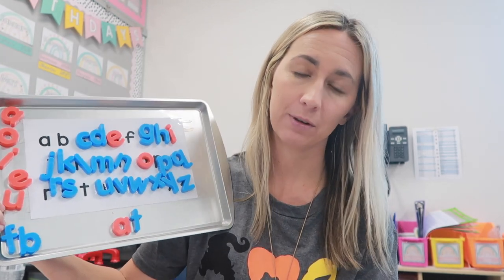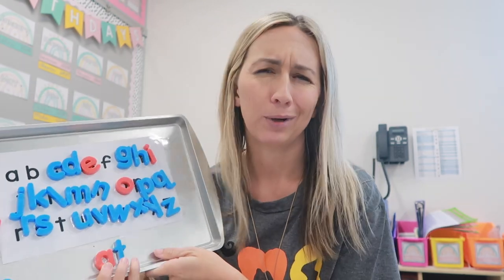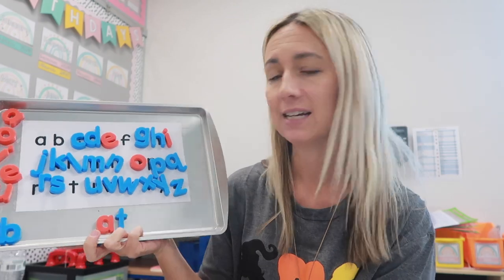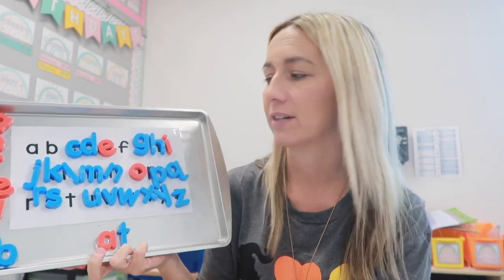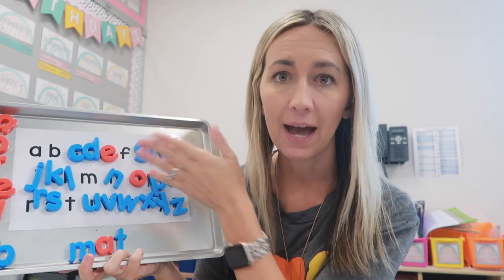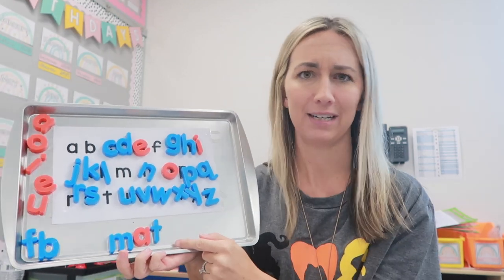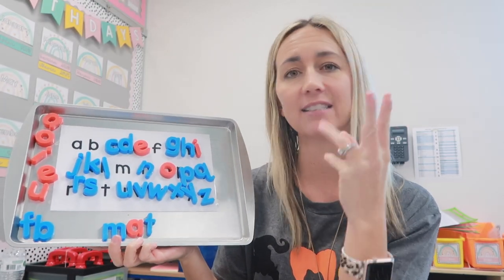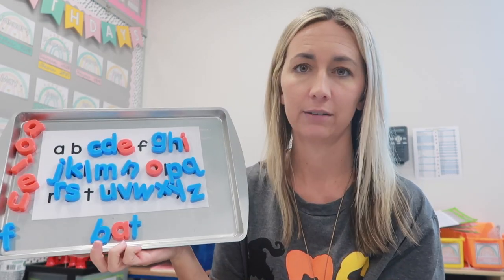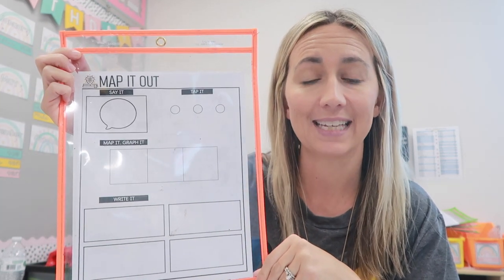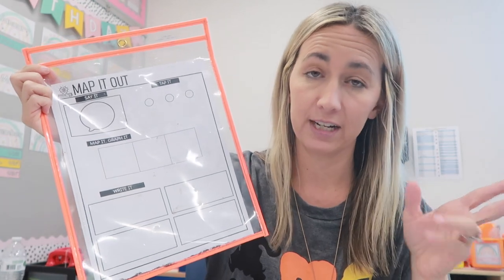Depending on the level, you can offer more support — 'I still have at, now I want to make mat, what letter is that?' — or challenge advanced students: 'I have mat but now I want bat — what letter do I need to take away?' and identify whether it's the first, second, or third sound. Then the last thing on Day 1 with that group is a sight word. This week it was 'the,' next week it'll be 'see.' There's a map-it-out form where you follow the high-frequency word routine with directions provided.